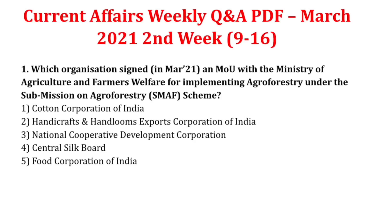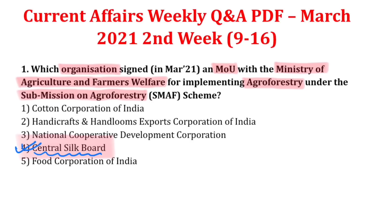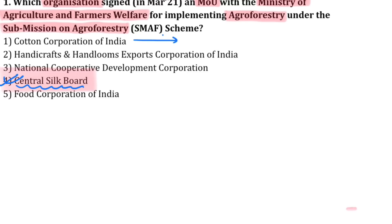The first question is: which organization signed an MOU with the Ministry of Agriculture and Farmers Welfare for implementing agroforestry under the Sub-Mission on Agroforestry? The answer is the Central Silk Board. Moving on, the Cotton Corporation of India has its headquarter in Mumbai.